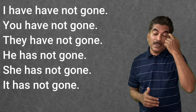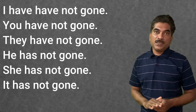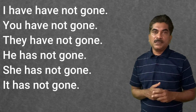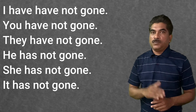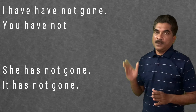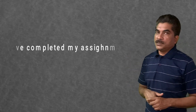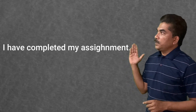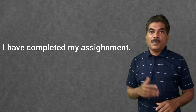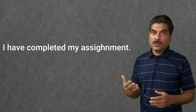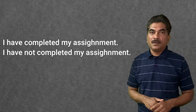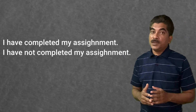You have to make affirmative sentences and negative sentences. For example, the affirmative sentence is: I have completed my assignment. The negative sentence is: I have not completed my assignment. The affirmative form must be changed to negative by adding 'not' after 'have'.